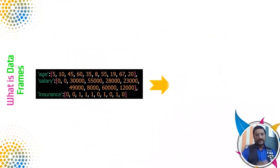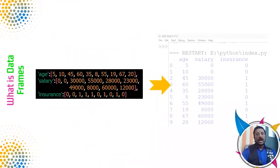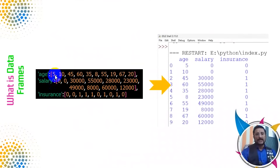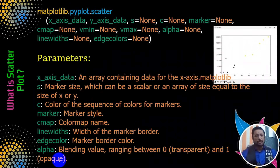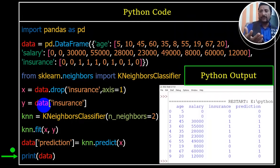The age, the salary, the insurance — the board will be able to get the data. What is the data? It's a chart of plotting. Let's see how we can plot it. What is the algorithm? It's a K-Neighbors Classifier algorithm.